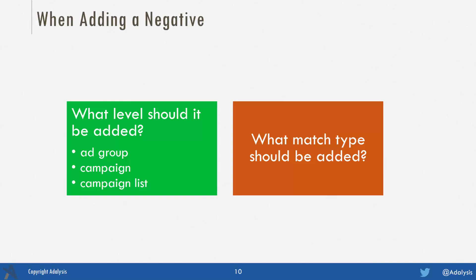So when we're adding a negative, we want to think about what level it should be added at: the ad group level to force another ad group to show, a campaign level to stop the query from showing across the entire campaign, or a campaign list if we want that negative in multiple campaigns. And then question two: which match type should you use?